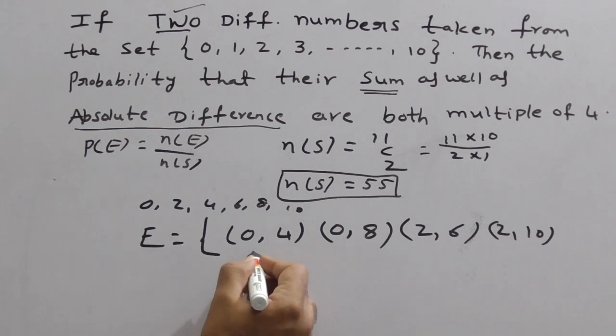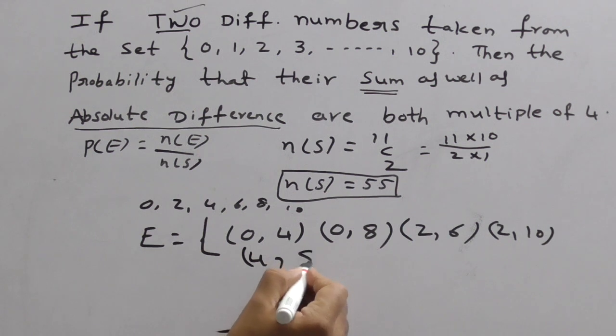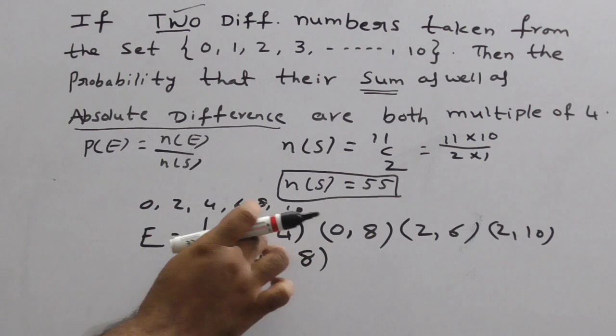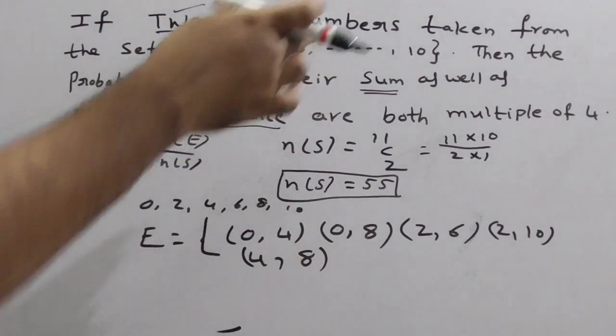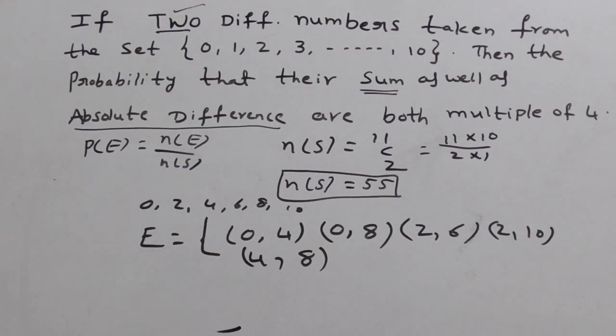Next. With 4. With 4 what is the number? Yes. That is 4 comma 8. 4 plus 8 and 4 minus 8. Next. No need to take 4 comma 0. Why? Because already here we have 0, 4. Because absolute difference is multiple of 4, you can take plus or minus both. Now 4 comma 8. Only one chance. After that, go to 6. For 6 what is the chance? Yes. 6 comma 10. Good.